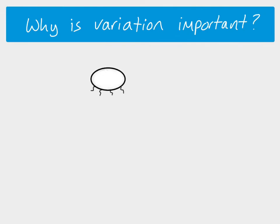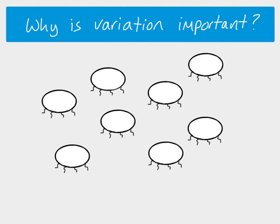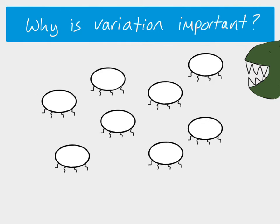We're going to use an imaginary little organism. Here's our organism and we're going to have a population of those organisms. This population lives in the same environment as a predator, and this particular predator doesn't have very good eyesight — it looks as if it hasn't got any eyes at all. It's only able to identify prey if there is a really big contrast between the prey and its background.